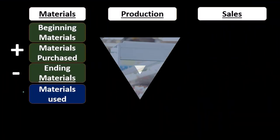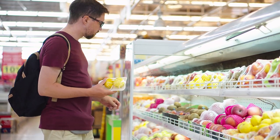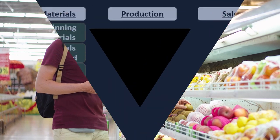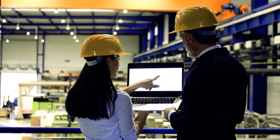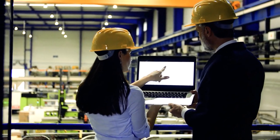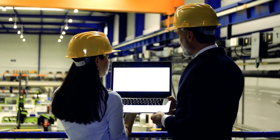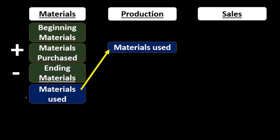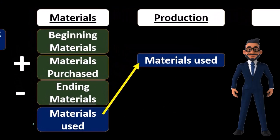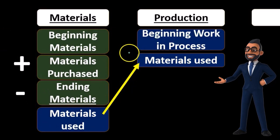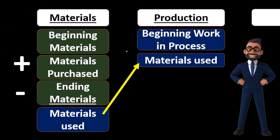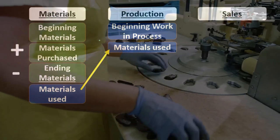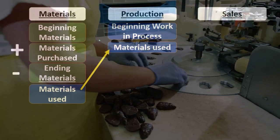This purchasing process determines the materials we're going to use within production. Once that happens, that number goes to our production area. It's what we used to produce, but it's not the only thing in production, because we also had the beginning work in process. When we think about production we're thinking about what's in process — work in process, or WIP, is often the term used here.